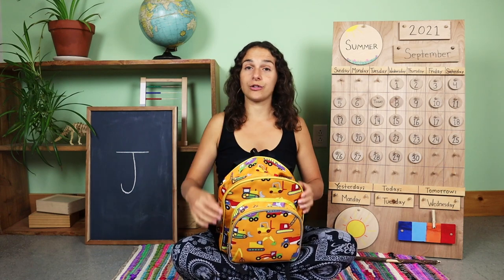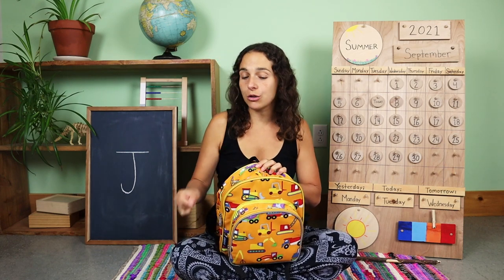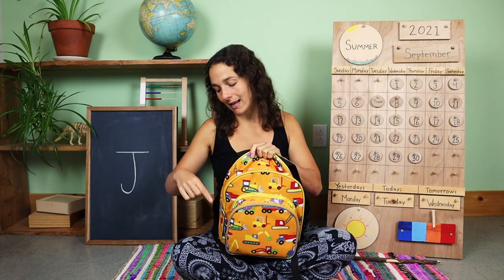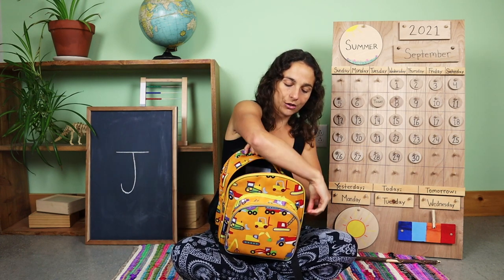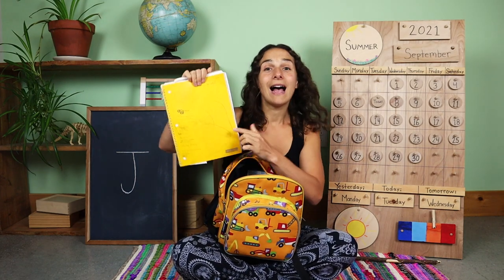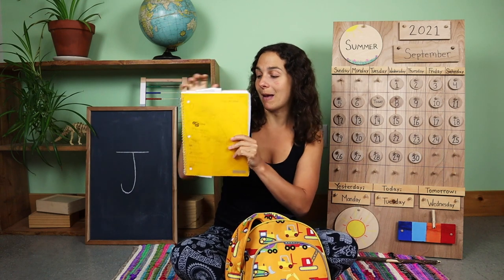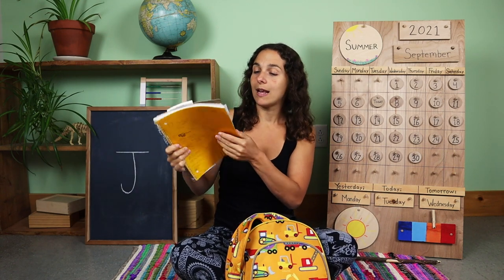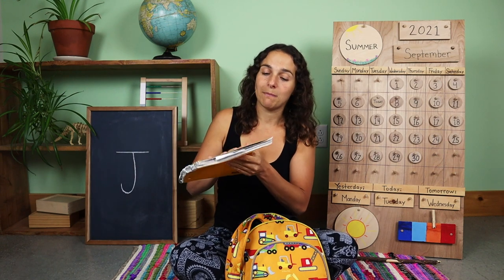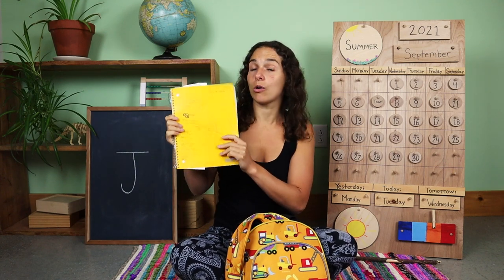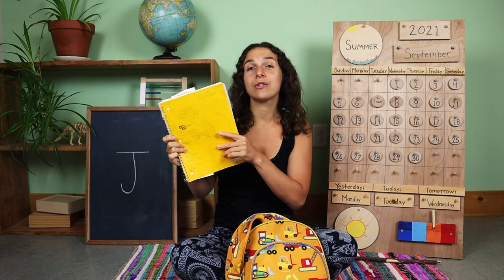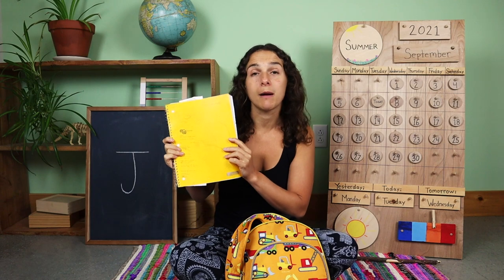Inside of the backpack today, I have a few different tools that are going to help me learn at school. Let's open up the larger zipper first. In order to unzip my backpack, I'm going to hold the backpack with one hand and with my other hand pull the zipper up and around. I have a notebook inside of my backpack. A notebook is a type of journal. There are pages inside, and the paper can either have lines on it or it can be blank. A notebook is used for writing or coloring, and whenever I work in it, I make sure that I use both sides of the paper because the paper comes from a tree.